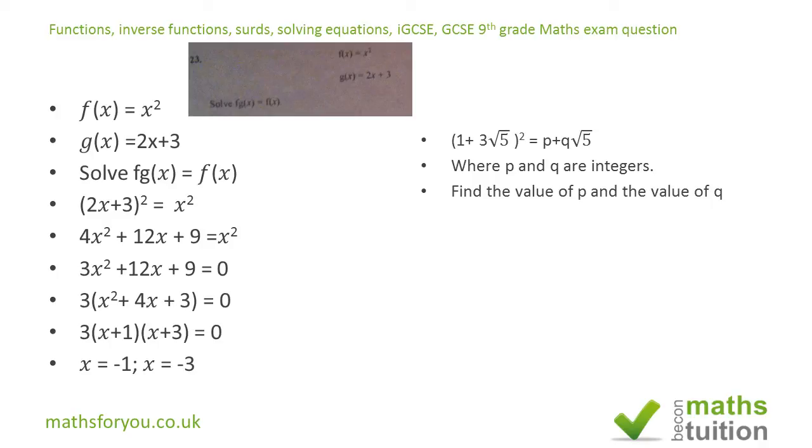If I expand this (1 + 3√5)² I get 1² + 2 times 3√5 + (3√5)² here. So that would then give me 1² + 6√5 + 9 times 5.